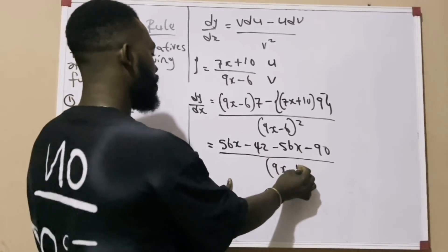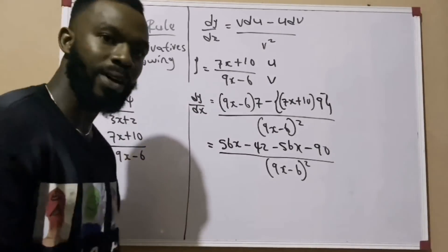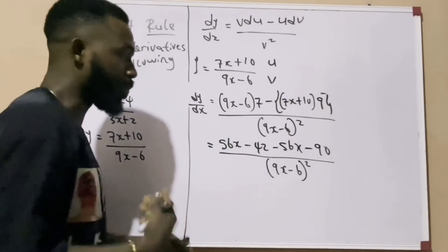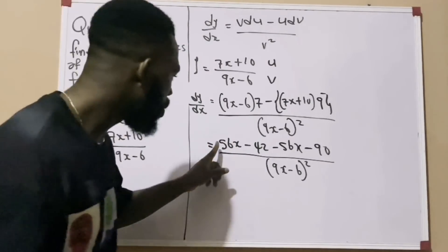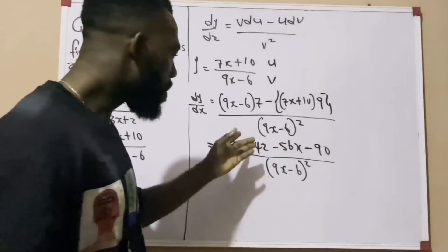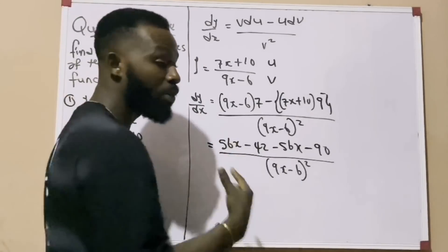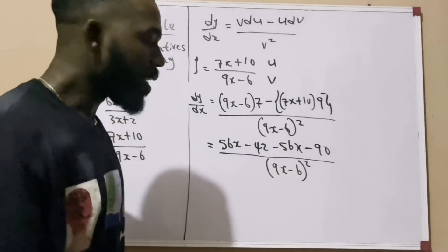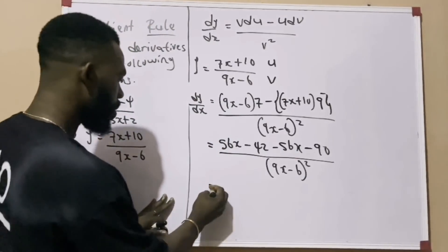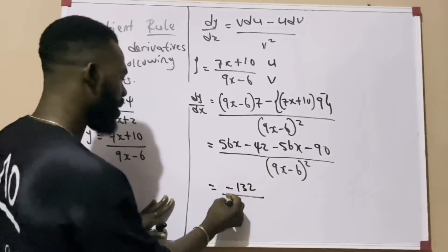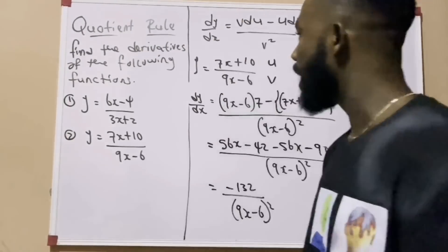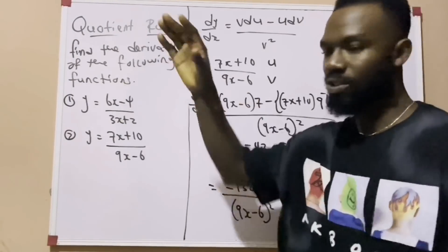All over (9x minus 6) squared. Now, 42 cannot be combined with 63x because they are unlike terms. So 63x minus 63x equals zero. What remains: minus 42 minus 90 — wait, let me recalculate: we have minus 42 and minus 90. Minus 42 means you owe 42, and minus 90 means you owe 90; together you owe 132. So the numerator is minus 132, and the final answer is negative 132 over (9x minus 6) squared. This is how you apply the quotient rule in solving functions like this.